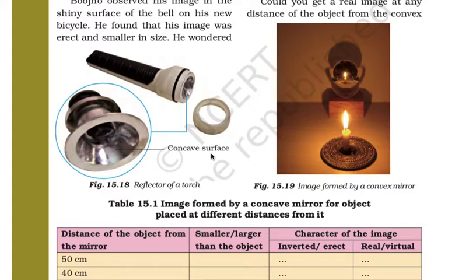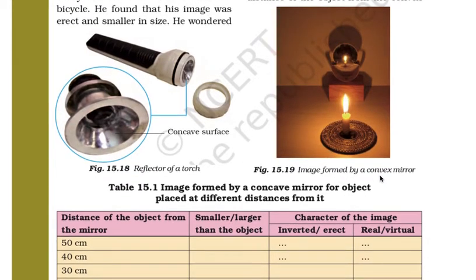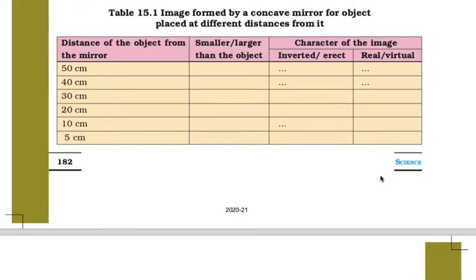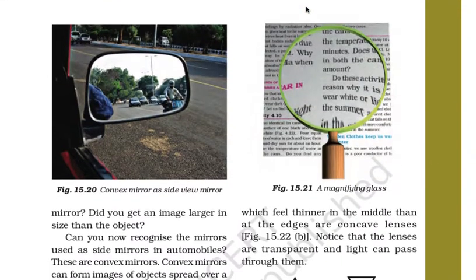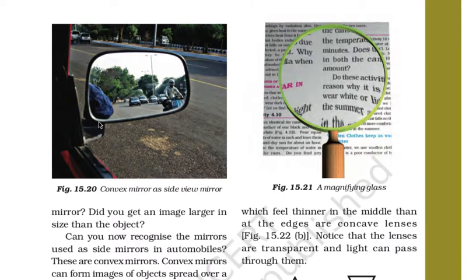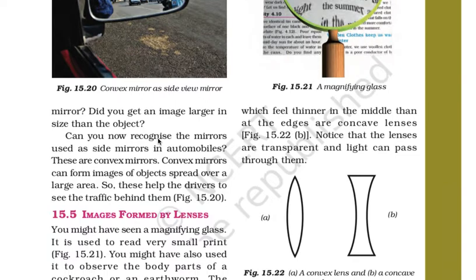Here the shiny part is a concave surface, and this is the image formed by a convex mirror. Coming to the topic discussed in part one, the rear mirrors of cars and scooters form an image much smaller compared to the real one. Can you now recognize the mirror used as side mirrors in automobiles? These are convex mirrors. Convex mirrors can form an image of objects spread over a large area, which helps the driver to see the traffic behind them.